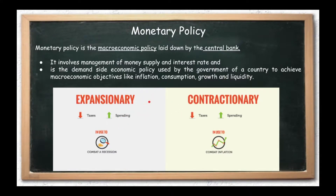Expansionary means expand. When RBI needs more spending in the market and more money, there will be changes so that the money flow will expand. The money supply needs to be increased. We will reduce taxes and reduce interest rates — we can take these steps so that the money supply expands.